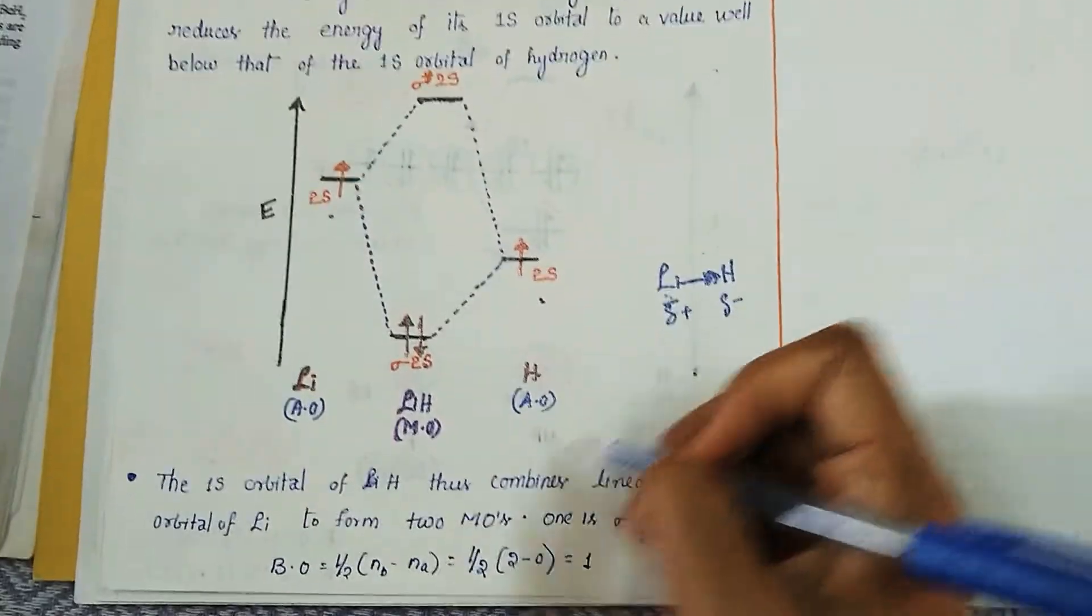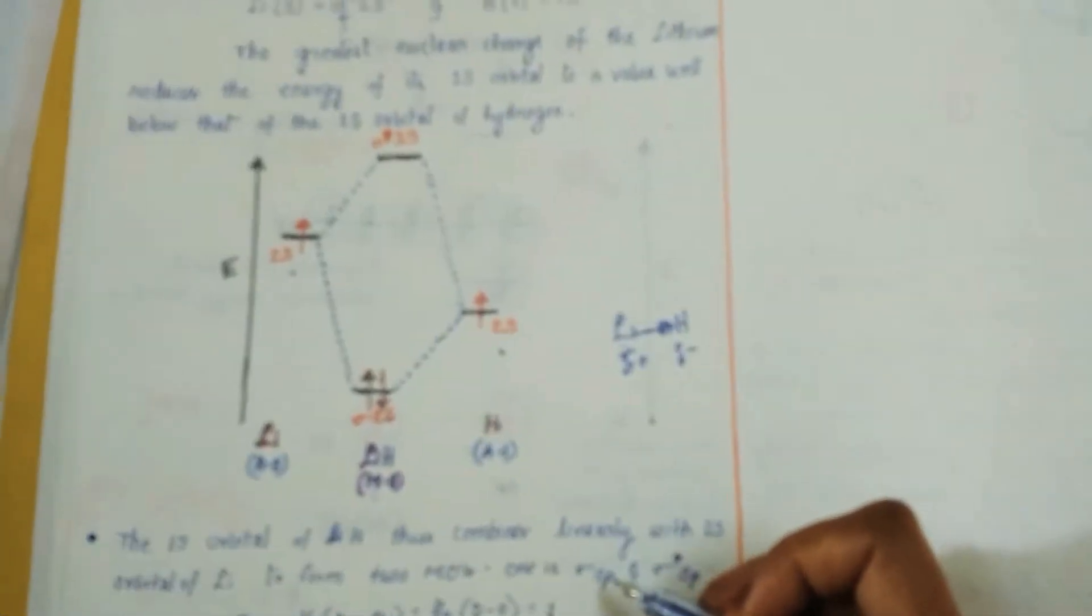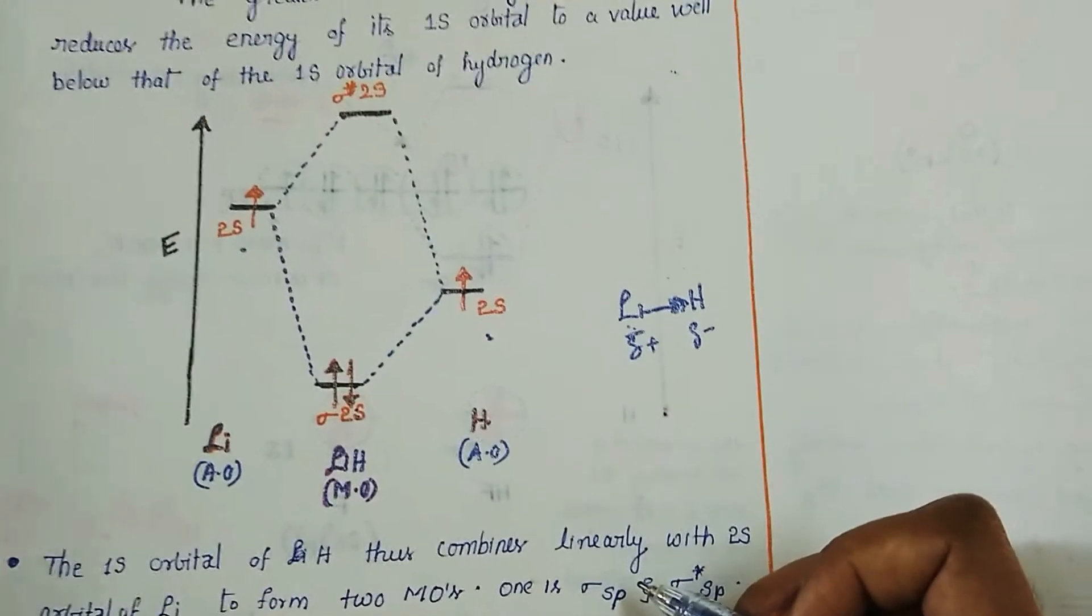This is considered as partially positive and this is considered as partially negative, so this is called polar covalent bond. So here we can notice the orbital energy increasing order we can write it as first sigma 2s and then sigma star 2s.